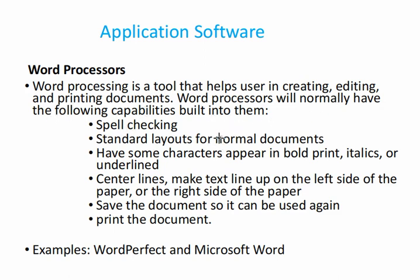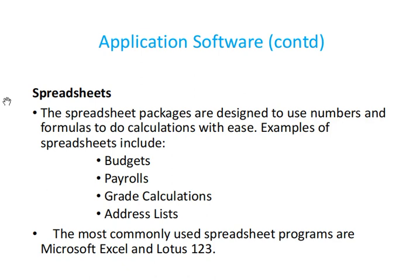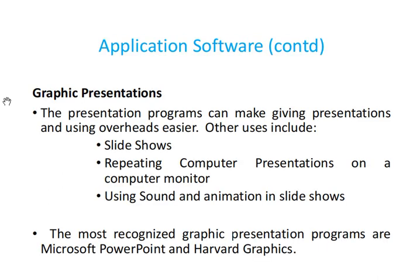Word processors have capabilities such as spell checking, standard document layouts, and text formatting including italics, underlining, and center alignment. Other examples of application software include spreadsheets — commonly known as Excel — and presentation software like Microsoft PowerPoint, which displays slide shows and supports animations, sound, and computer presentations on a projector or monitor.